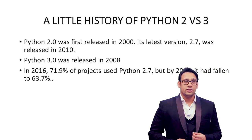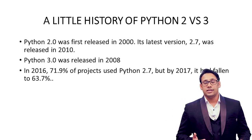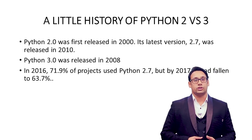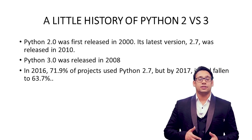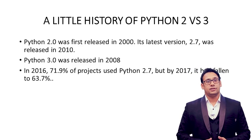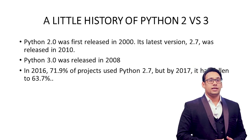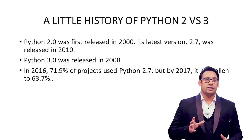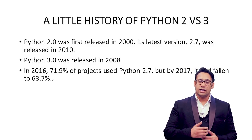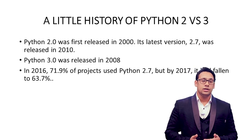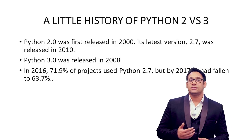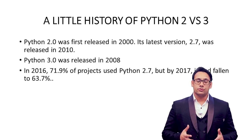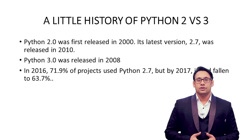As you can see in the slide, there is a history of Python 2 and Python 3. Python 2 was released in the year 2000, the latest version Python 2.7 was released in 2010, and Python 3.0 was released in 2008 — nowadays we are using Python 3.7. Till 2016, 71.9 percent of projects were written in Python 2.7, but from 2017 onwards that number started falling to 63.7 percent and continues to decrease, making Python 3.7 the better choice for future applications.